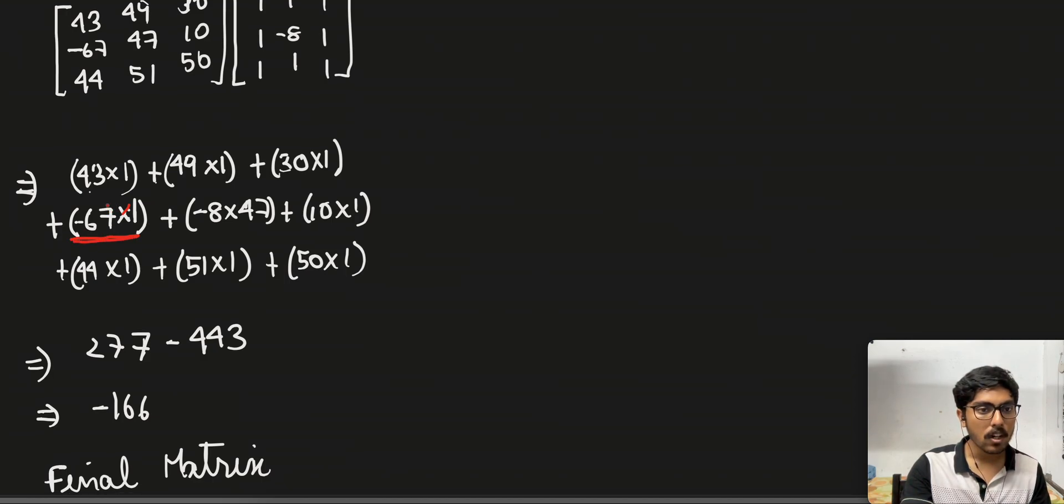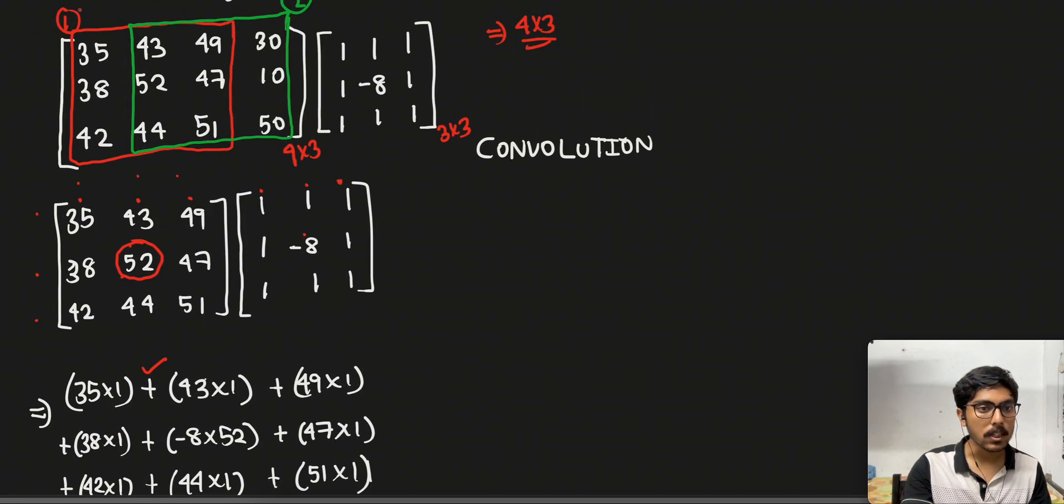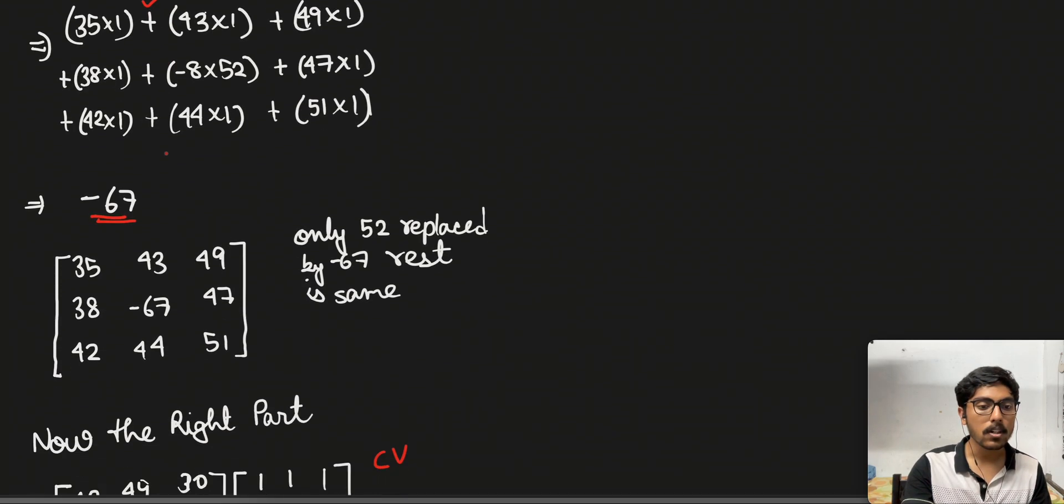Because we have already performed this particular step, that is 1 and once 52 has been changed into minus 67, it will be used as it is in the next step. So we will use minus 67 into 1 and then continue the calculation.